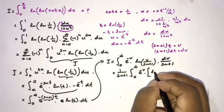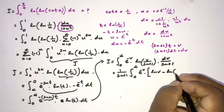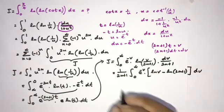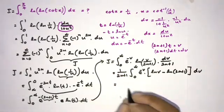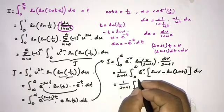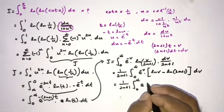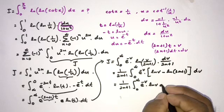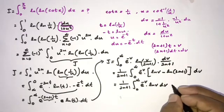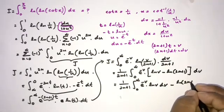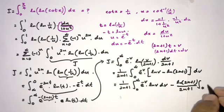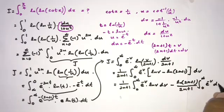By the property of natural log, ln(v/(2n+1)) = ln(v) − ln(2n+1). So we get 1/(2n+1) times [∫₀^∞ e^(−v) ln(v) dv minus ln(2n+1) times ∫₀^∞ e^(−v) dv]. The second integral equals 1, giving J = [−γ − ln(2n+1)] / (2n+1).